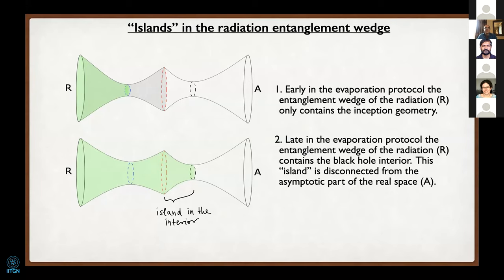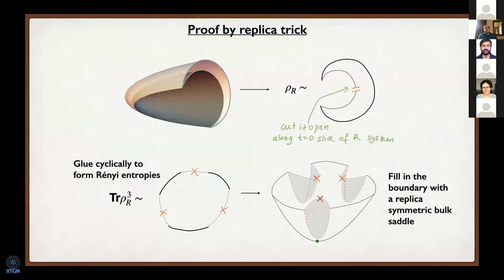It's useful to have more simplified settings to understand why this island formula is occurring. The original entanglement island formula was derived in two dimensions by applying the replica method. In all of these cases there are technical challenges: there's a gravitating region directly glued onto a non-gravitating region, so you have to solve the welding problem. This makes it difficult to extend the argument to higher dimensions where self-consistency of gluing a gravitating geometry to a non-gravitating one is unclear.